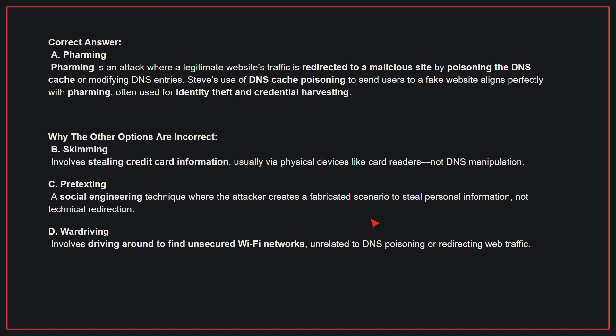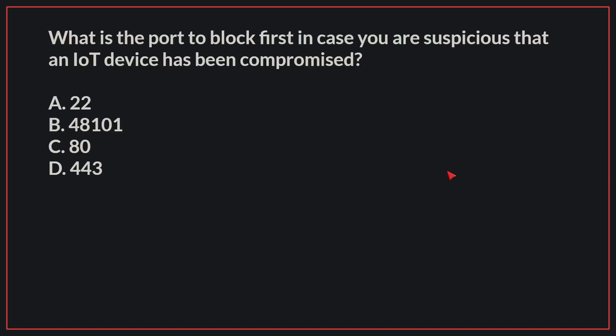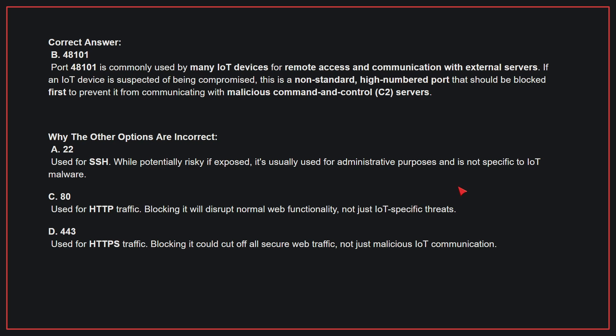Therefore, the correct answer is A. What is the port to block first in case you are suspicious that an IoT device has been compromised? The correct answer is B, port 48101. Port 48101 is commonly used by many IoT devices for remote access and communication with external servers. If an IoT device is suspected of being compromised, this is a non-standard, high-numbered port that should be blocked first to prevent it from communicating with malicious C2 servers.